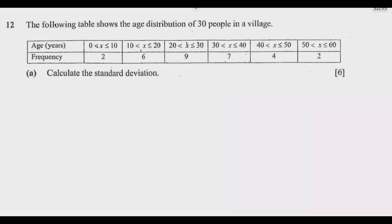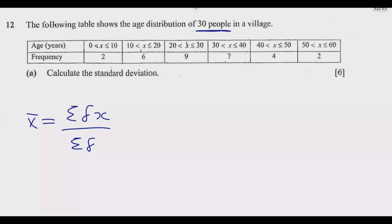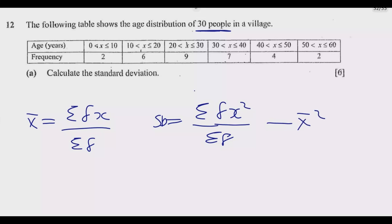Let us start with question A, which asks us to find the standard deviation. First, we go to the second page of the question paper to see the formula. The mean is given by the summation of frequency multiplied by the middle value x, divided by the sum of the frequencies, which is 30. The standard deviation is given by the square root of the summation of frequency times x squared, over the sum of frequencies, minus the mean squared. We need two things: the mean and the sum of frequency times x squared.